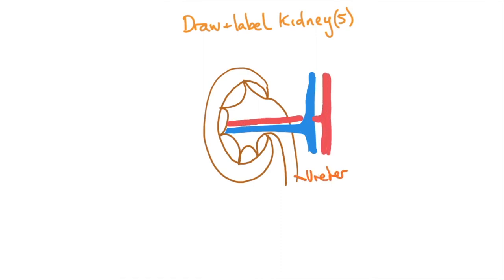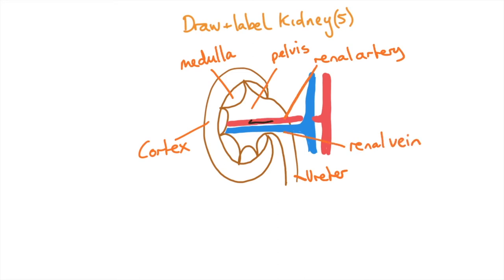Now we're going to label. Make sure you use lines that touch the object you're labeling. We use the word renal whenever we're talking about kidneys. The renal artery has blood flowing in and the renal vein has blood flowing out.